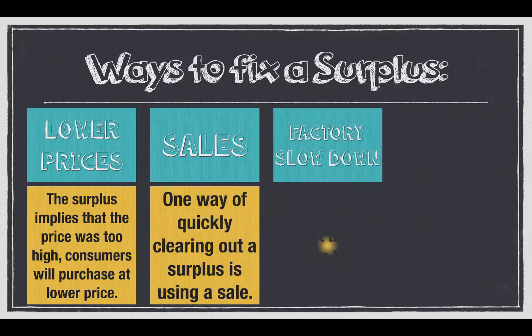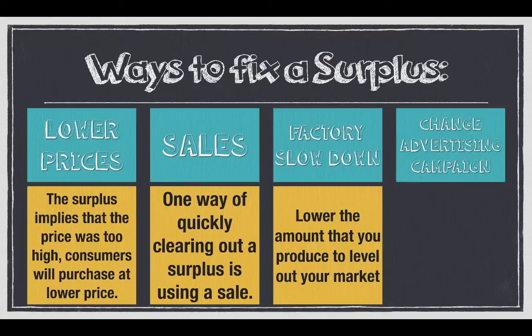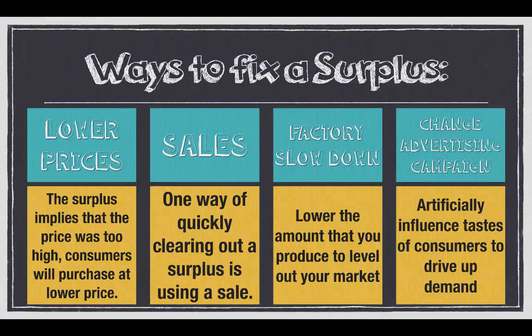Next, we see a factory slowdown — we want to lower the amount that we're producing, so cut hours and do all those things, which is bad for the worker but good for the bottom line. Last but not least, we want to see a change in the advertising campaign — maybe get somebody famous to endorse our product publicly, and then that will change the number of people who would like to purchase it.